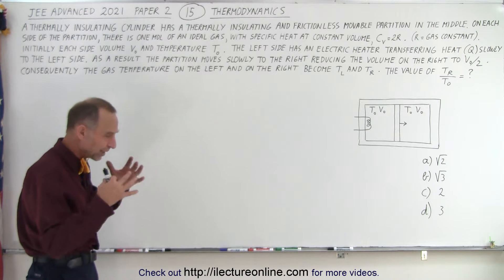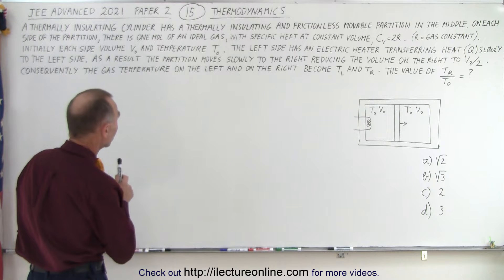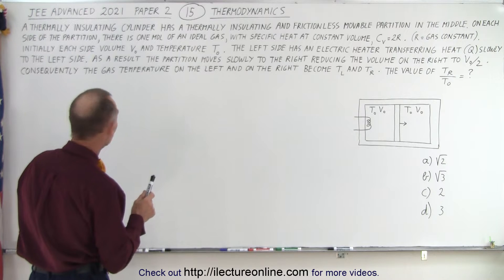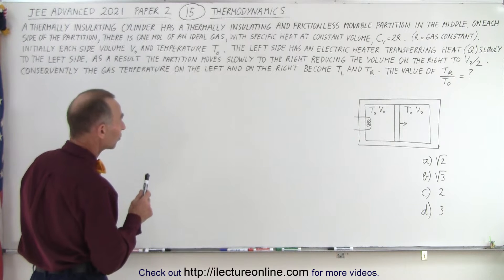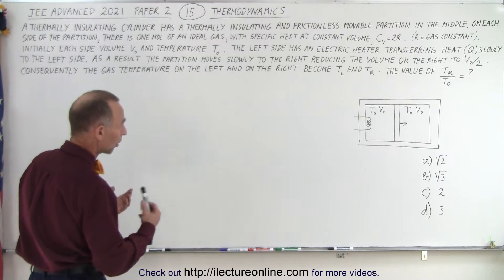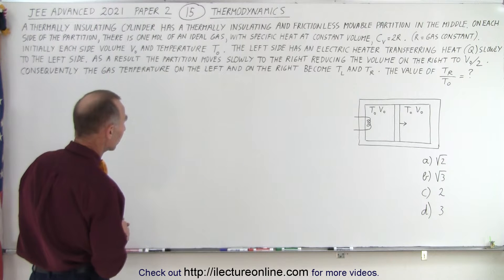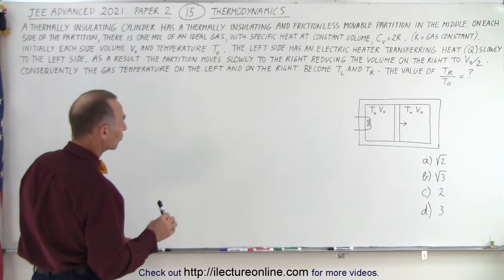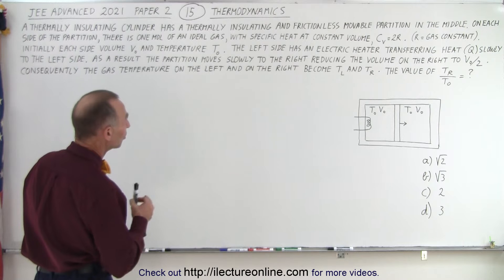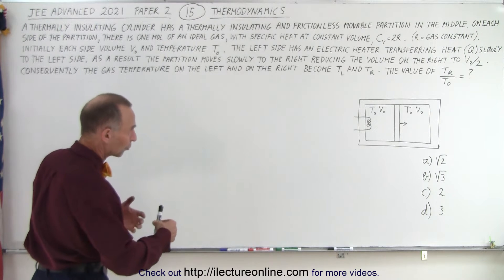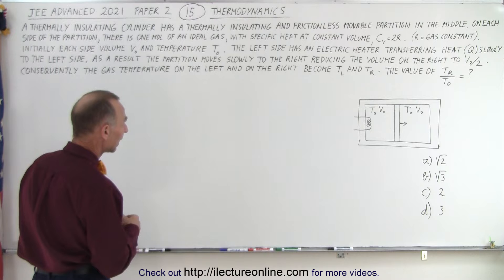It's a long problem to read, and of course you're time constrained, but you need to read it carefully. It says: a thermally insulating cylinder has a thermally insulating and frictionless movable partition in the middle. On each side of the partition there is 1 mole of an ideal gas with specific heat at constant volume C_V equal to 2R, where R is the gas constant. Initially, each side is volume V0 and temperature T0. The left side has an electric heater transferring heat Q slowly to the left side. As a result, the partition moves slowly to the right, reducing the volume of the right to V/2 — in other words, to half its original volume. Consequently, the gas temperature on the left side and on the right side become T_L and T_R.